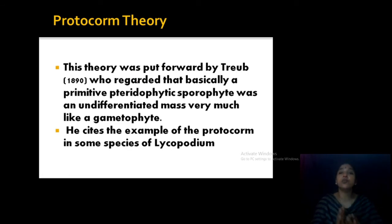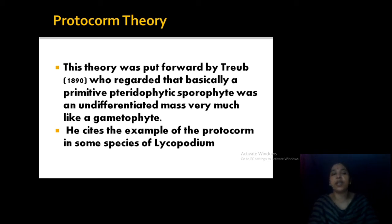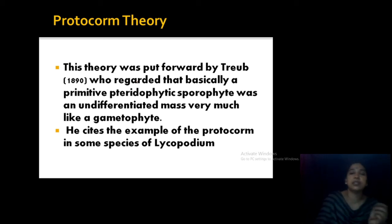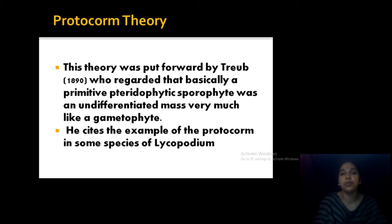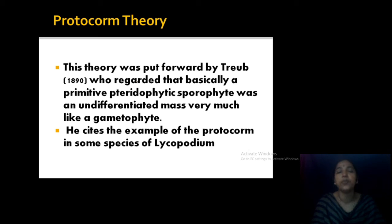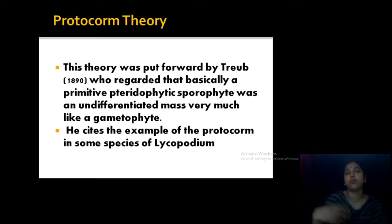The Protocorm theory is put forward by Treub. It says that some primitive pteridophytes have an undifferentiated mass of tissue similar to the gametophyte, known as the protocorm. This is regarded as the primitive pteridophyte sporophyte. An example of a protocorm is found in species of Lycopodium. From that protocorm, the entire sporophyte developed.